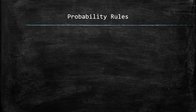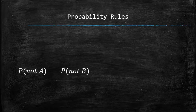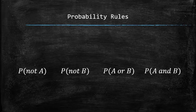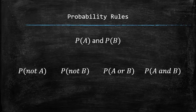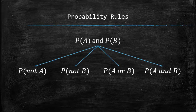The purpose of developing probability rules is to be able to determine the probabilities of the complements, the union, and the intersection of events A and B from the probabilities of A and B. That is, to find the probabilities of compound events if the probabilities of the original events are given.